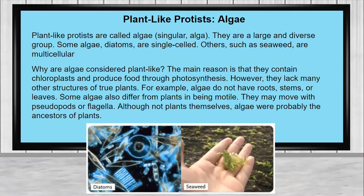Why are algae considered plant-like? The main reason is that they contain chloroplasts and produce food through photosynthesis. However, they lack many other structures of true plants. For example, algae do not have roots, stems, or leaves. Some algae also differ from plants in being motile — they may move with pseudopods or flagella. Although not plants themselves, algae were probably the ancestors of plants.